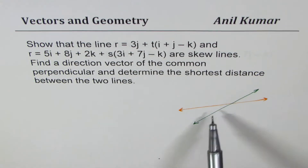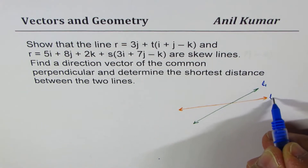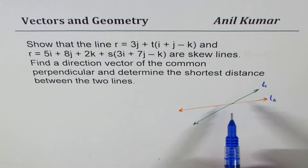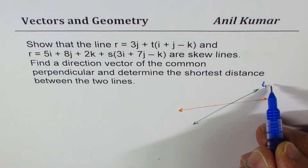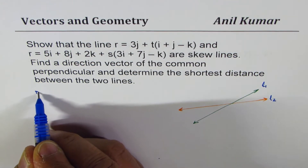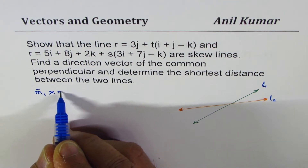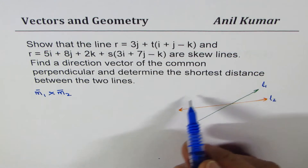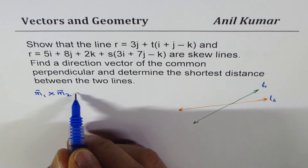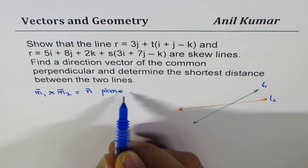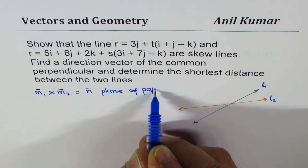Let's call them lines L1 and L2. If I do a cross product of their directions M1 and M2 — that is M1 cross M2 — then that cross product will be normal to the plane of the paper on which these two lines lie.